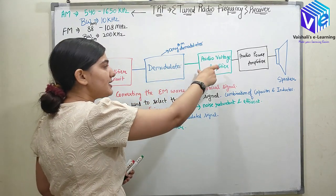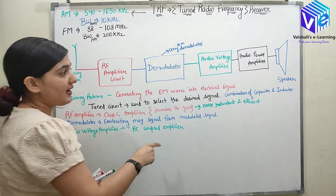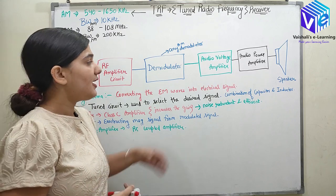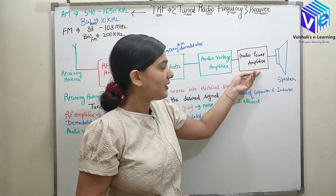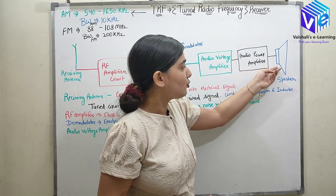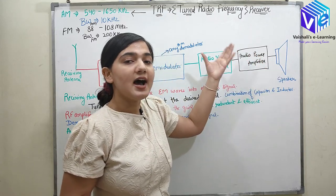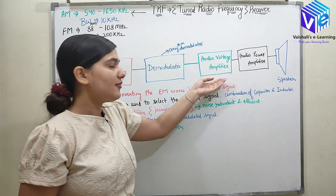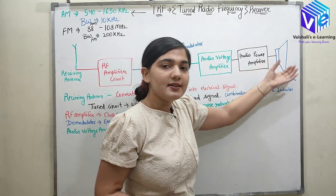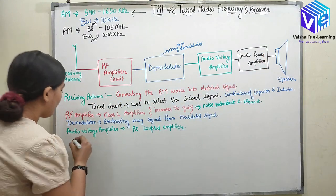In the audio voltage amplifier stage, we are increasing the voltage gain. After that we have the audio power amplifier. Here we have already increased the voltage; in this stage we will increase the current so that the speaker will work. The speaker requires a high current signal, so when we increase the current the speaker can work effectively.